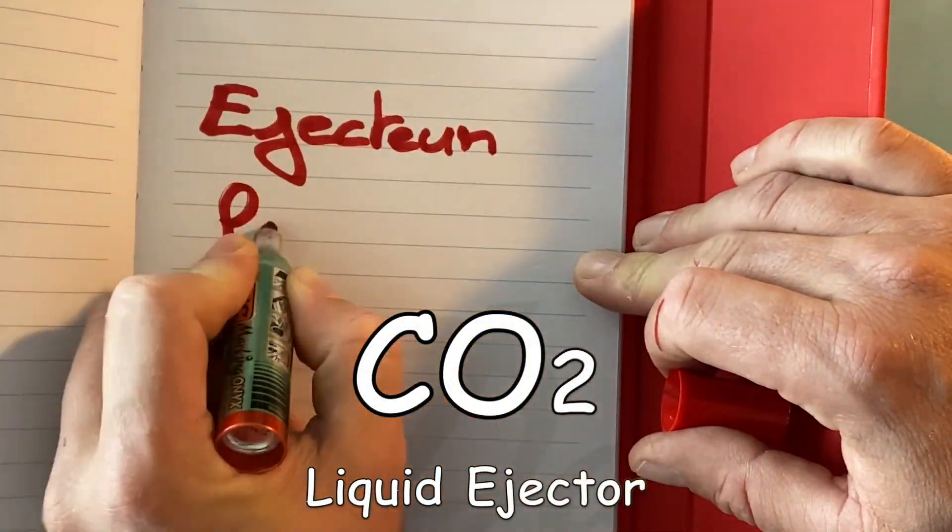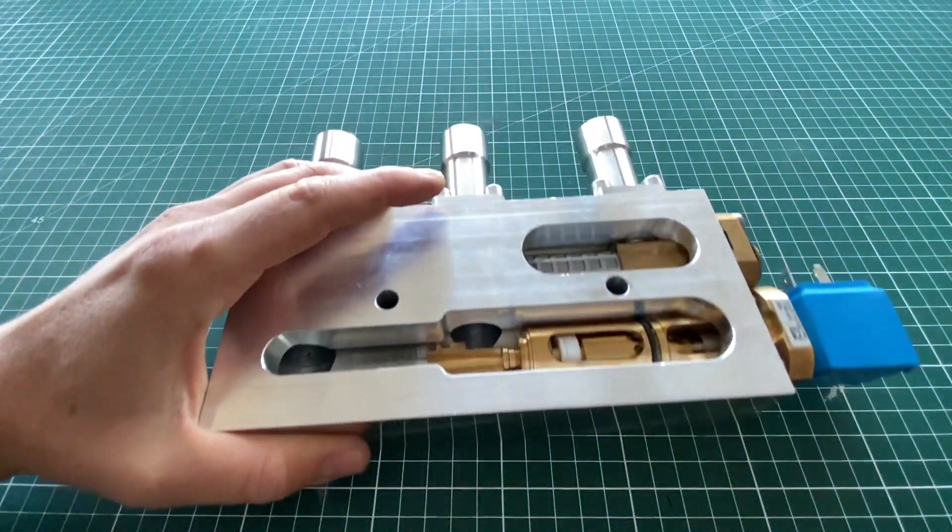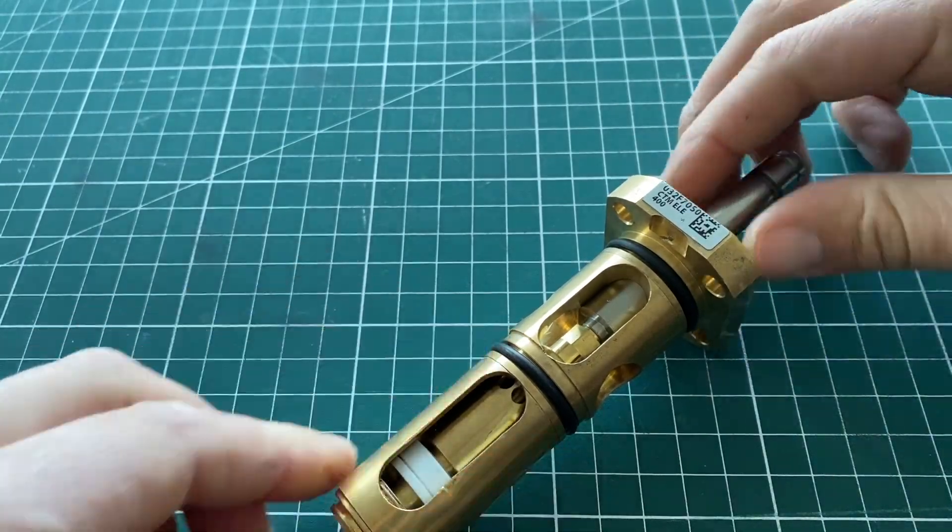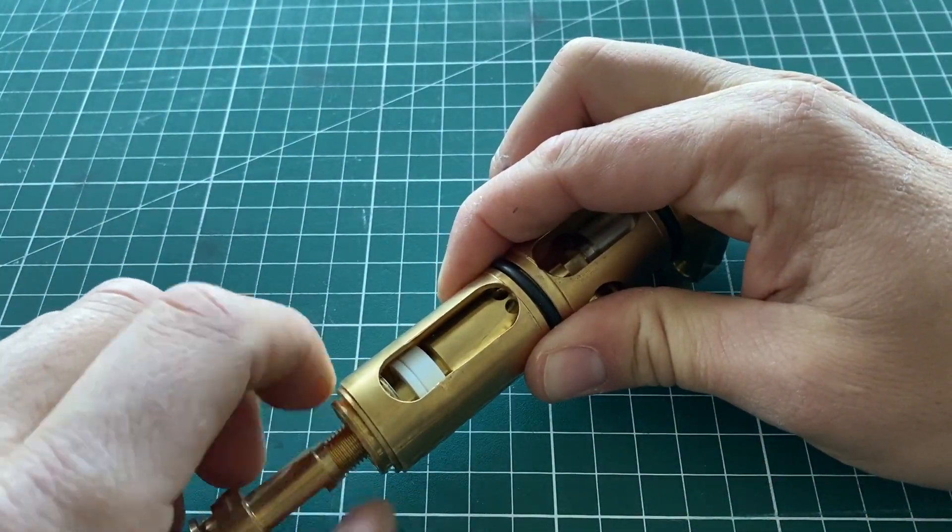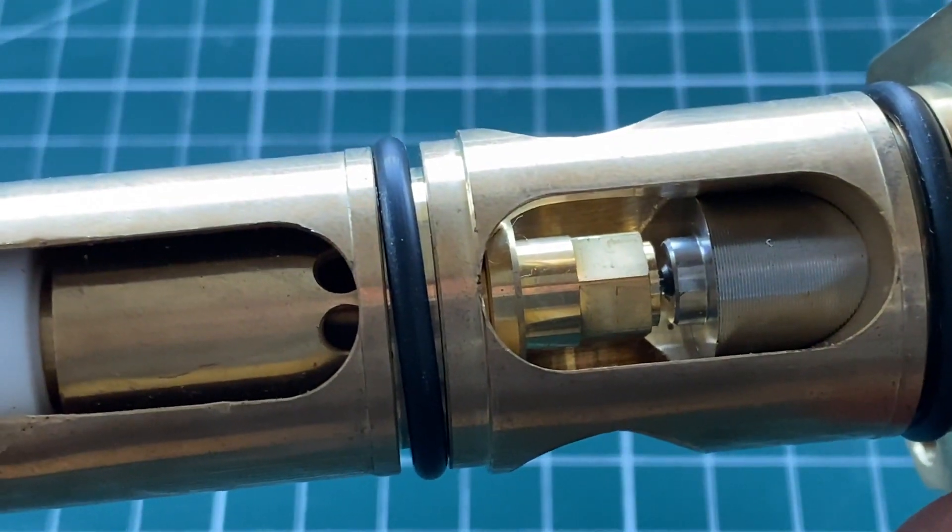Hello and welcome for this video regarding the liquid ejector. An ejector has a part in which the primary mass flow expands through a convergent. The pressure decreases and the speed increases. Potential energy is transformed into kinetic energy.